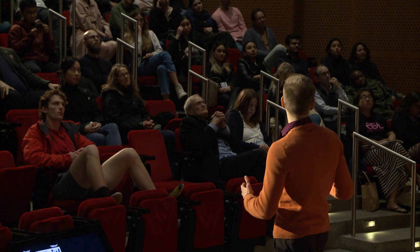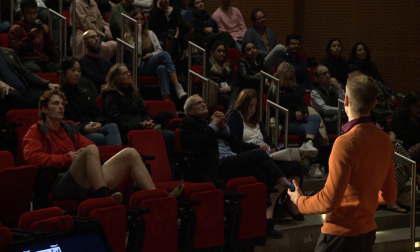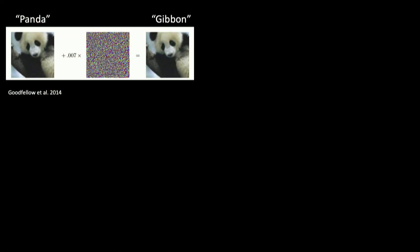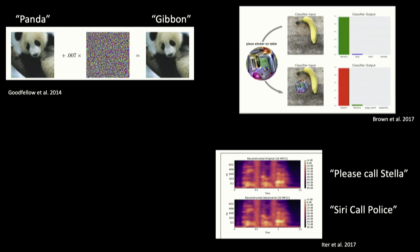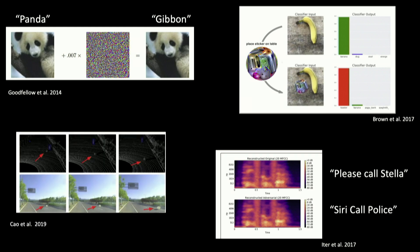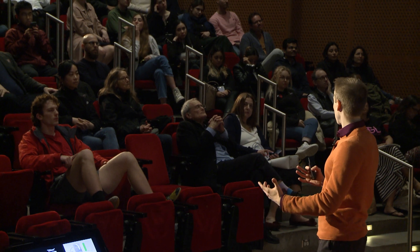These phenomena of adversarial attacks were first discovered almost a decade ago on image classification neural networks, and it has been shown that most modern neural network architectures are susceptible to this kind of misclassification. In particular, it has been repeated on voice recognition. You can even print out adversarial patches to fool object detection algorithms, and researchers have proposed 3D-printed objects that are invisible to an AI in an autonomous vehicle.